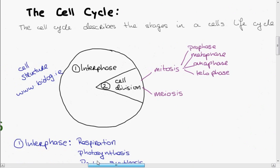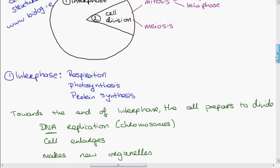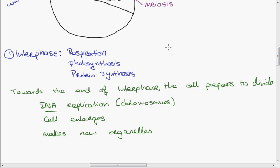So if we go back here to the cell cycle. During interphase, the cell is going about its everyday activities, for example, respiration, protein synthesis. So we'll call these the cells' everyday activities. And at the end of interphase, it prepares to divide.